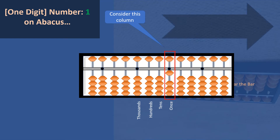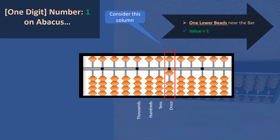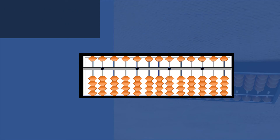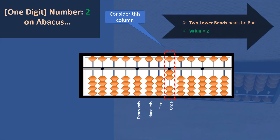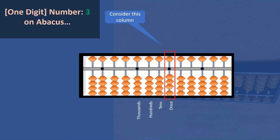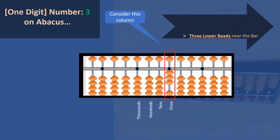How to write one on abacus: one bead has moved towards the bar at the ones place, so the value is one. How to write two: two beads are moving towards the bar, so the value is two. These are the lower beads which are moving towards the bar.